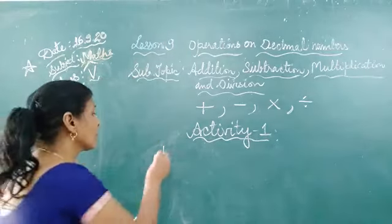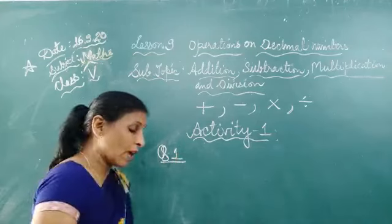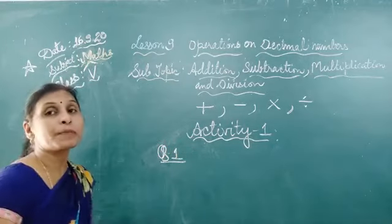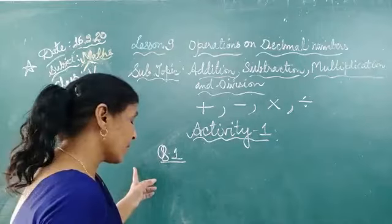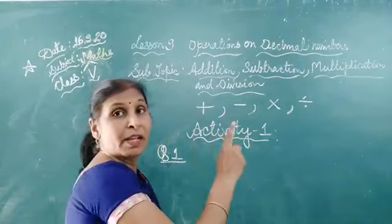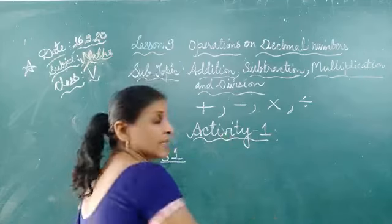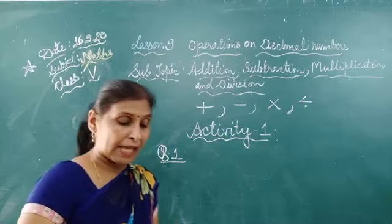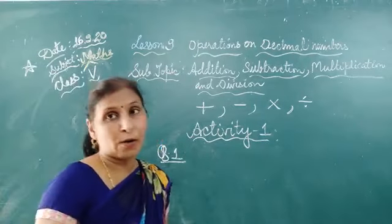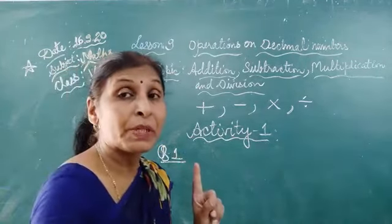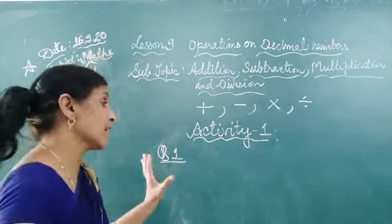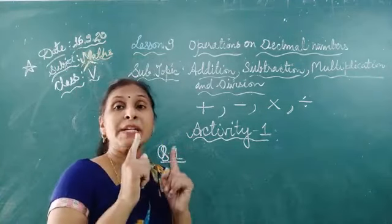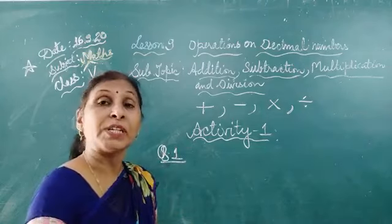In activity 1, the questions are based on addition and subtraction of decimal numbers. You should remember, convert the unlike decimal into like decimal numbers. Arrange the decimal numbers vertically with the decimal points in one line and then add and subtract accordingly. Digit ke nyeche digit aur decimal point ke nyeche decimal point likna hai.